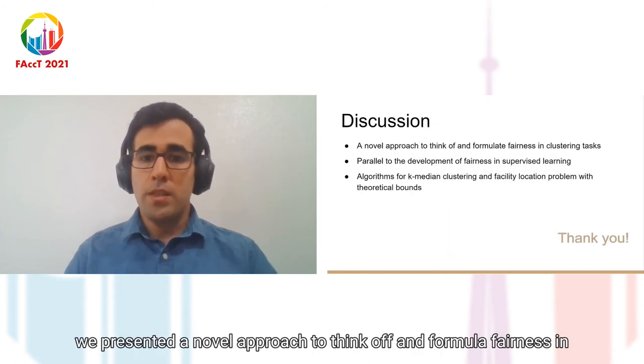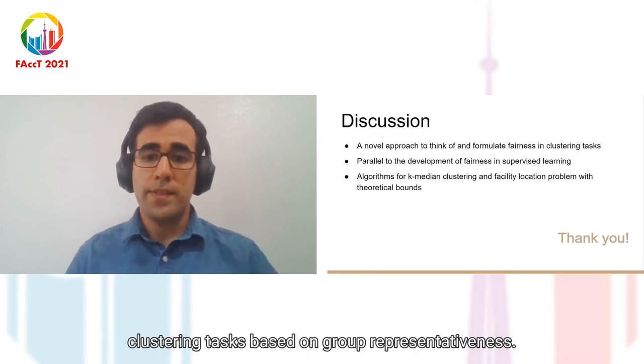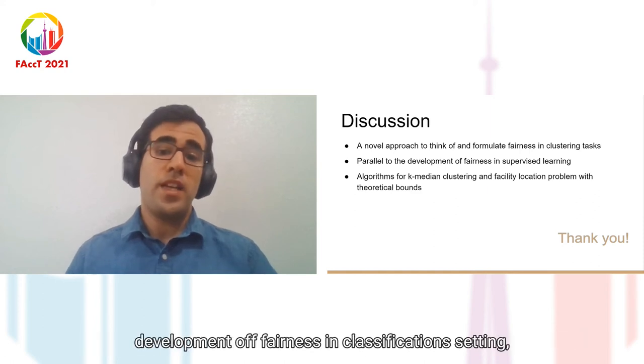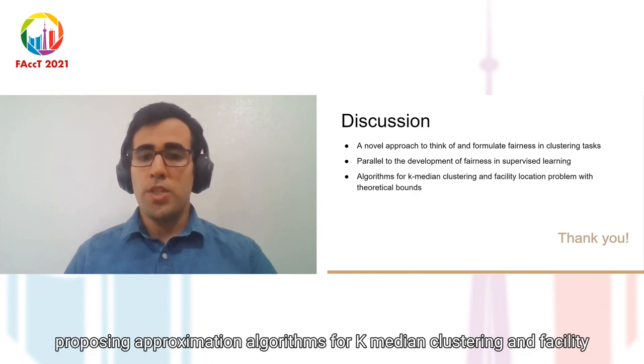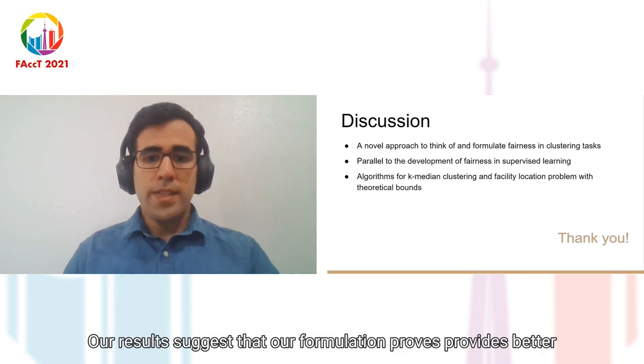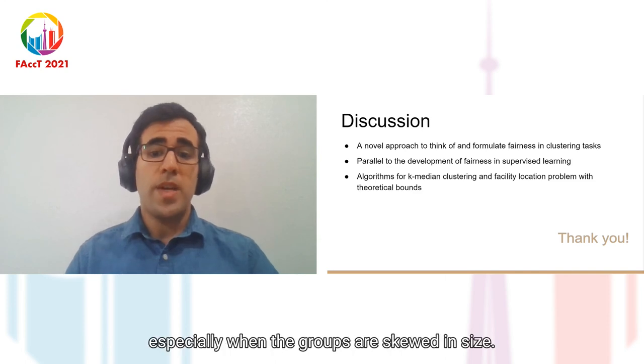In this paper, we presented a novel approach to think of and formulate fairness in clustering tasks based on group representativeness. Our main contributions are introducing a fairness notion which parallels the development of fairness in classification setting, proposing approximation algorithms for k-median clustering and facility location, as well as theoretical bounds for all variations of these algorithms. Our results suggest that our formulation provides a better quality representation, especially when the groups are skewed in size. Thank you.